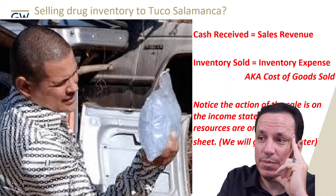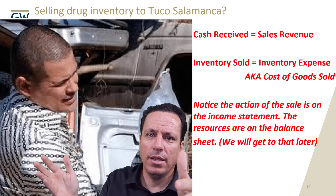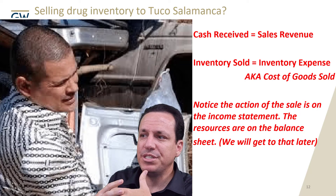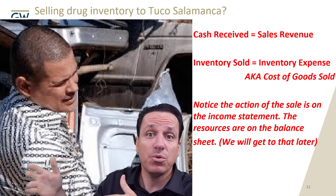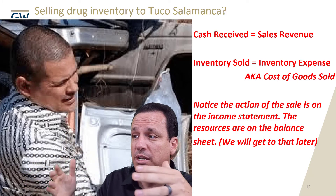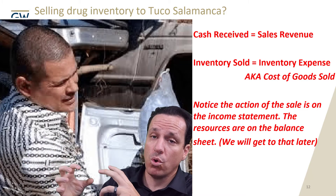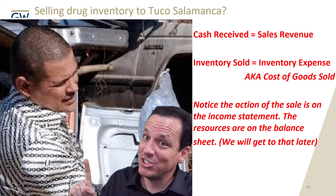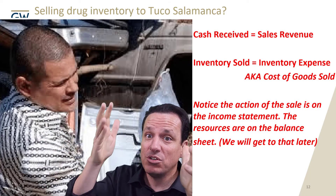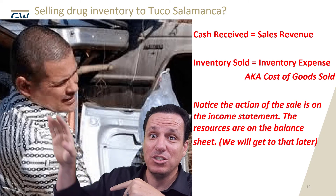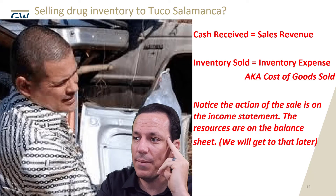Let's go to Mr. Heisenberg for some examples. You sell your drug inventory to Tuco Salamanca, the distributor. Any cash you receive is going to be revenue, and the inventory you gave him — the bag of crystal — is the inventory expense, which we call cost of goods sold. Notice the action of the sale is on the income statement, but the resources — where are they always? Resources are always on the balance sheet. The income statement describes what's happening with your resources. The cash ends up on the balance sheet; the inventory comes off the balance sheet, represented on the income statement as a sales and inventory expense.